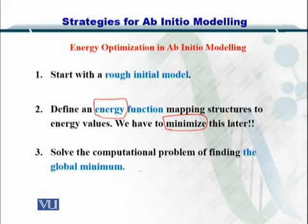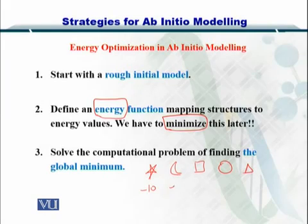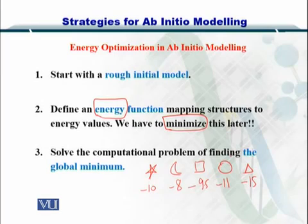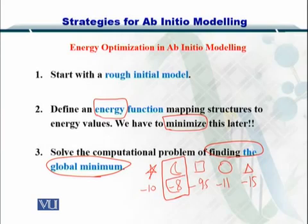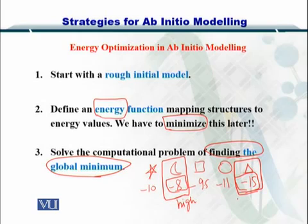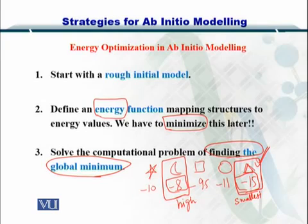Now you have multiple structures. If you consider the hydrogen bonds in each structure and each one has an energy corresponding to the number of hydrogen bonds, then you have to find the global minimum. As you can see here, this structure has minus 8, while this structure has minus 15, which is the smallest. So this is the structure with the lowest energy — you select this structure and then check for its biological plausibility.